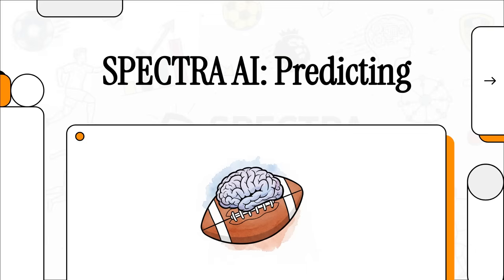Can a machine, an algorithm, truly understand the beautiful game? Today, we're putting a seriously powerful AI, Spectra, to the test. We're pitting it against the raw, unpredictable chaos of the English Premier League. We're about to find out if cold, hard data can actually make sense of the passion and glory of football. Let's get right into it.